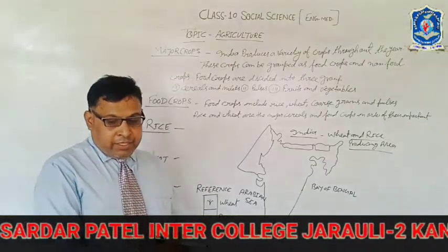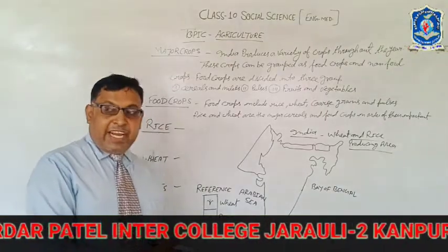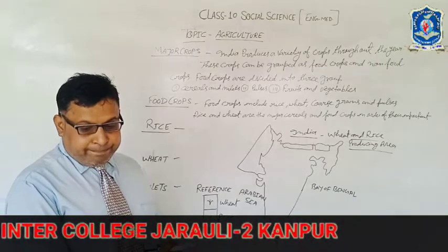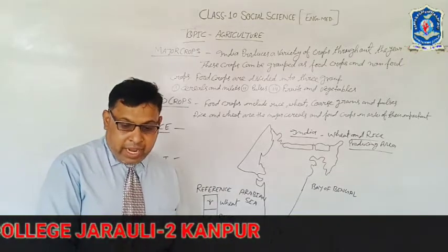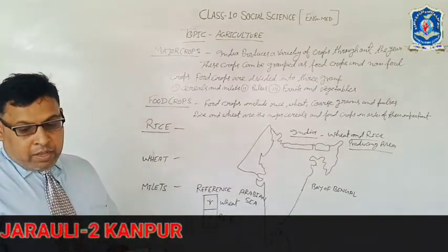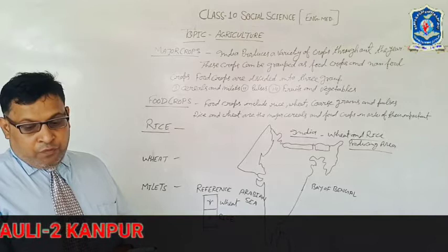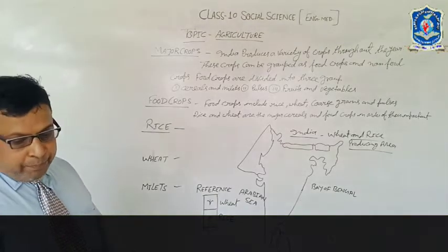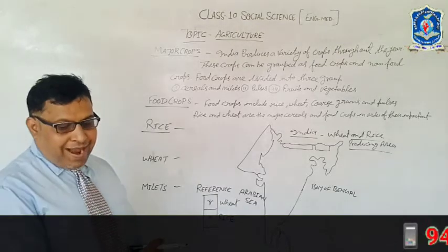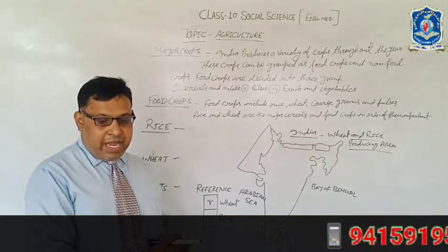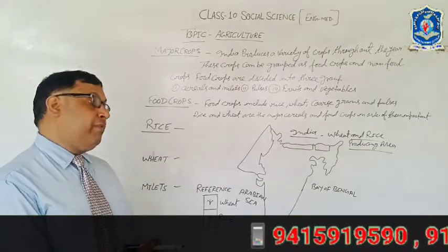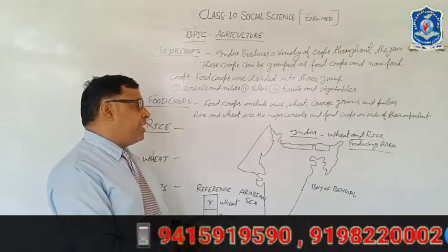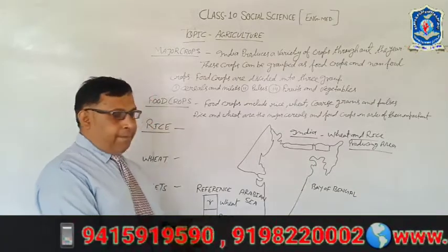Wheat is the second most important food crop, particularly for the people of North and North-Western India. It is the major rabi crop — यानि सर्दी की फसल।